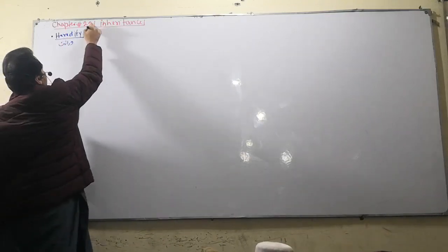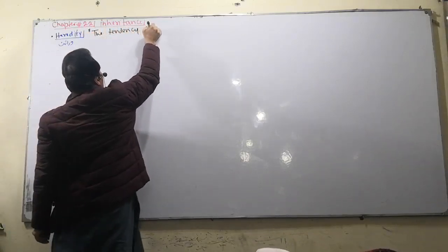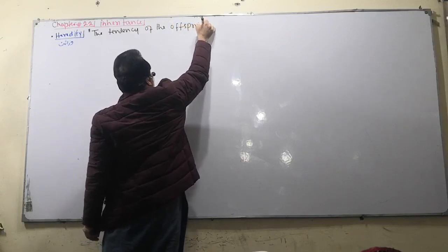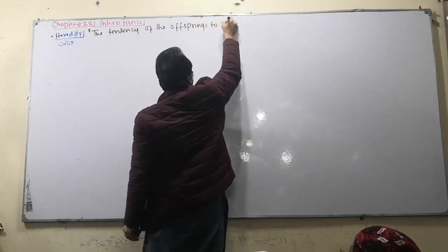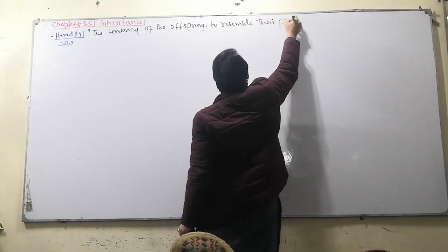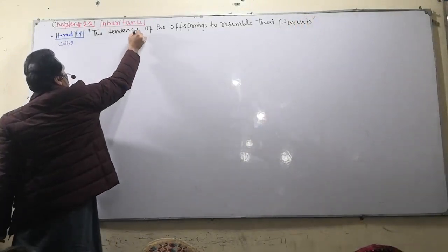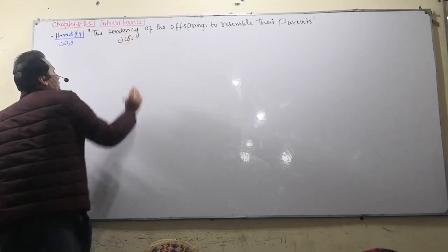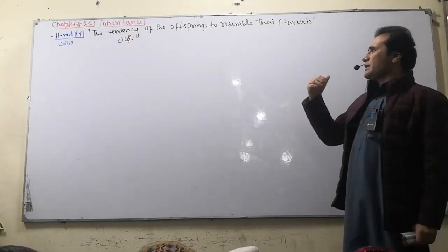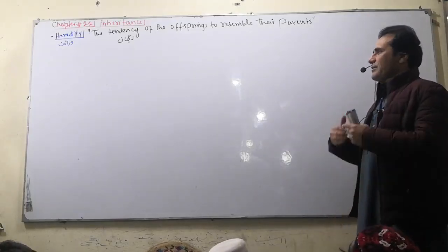Heredity is the tendency of the offspring to resemble their parents. The tendency of the offspring to resemble the appearance of the parents — the appearance of the child.